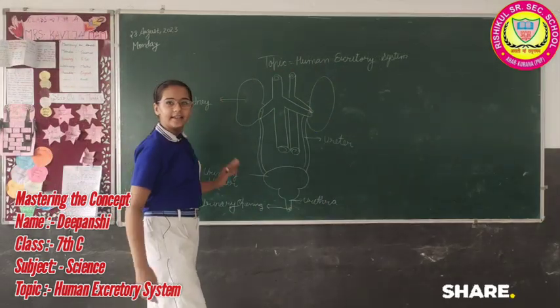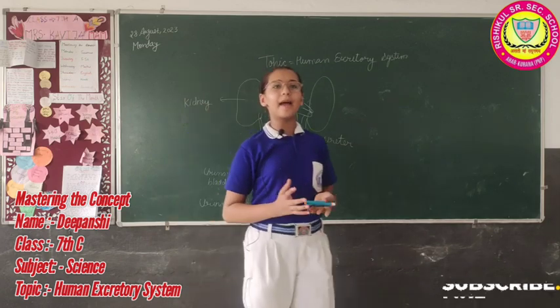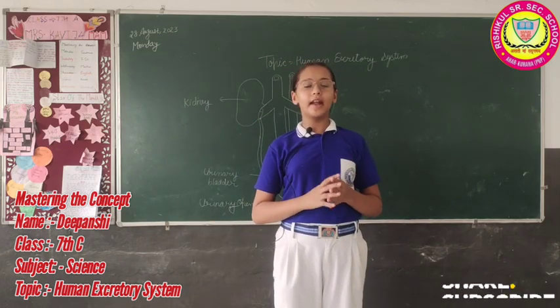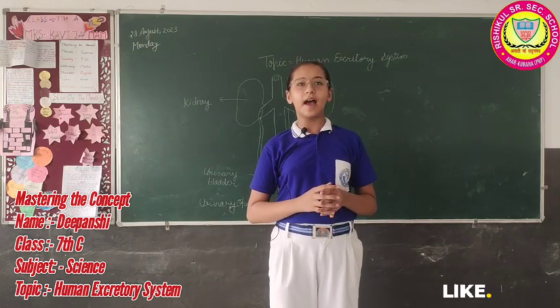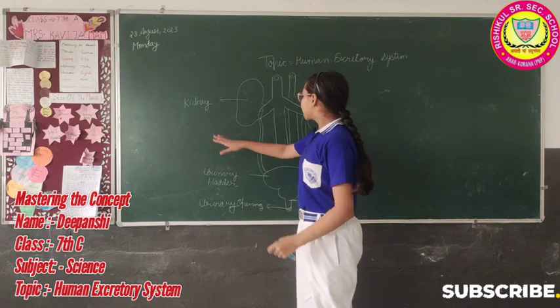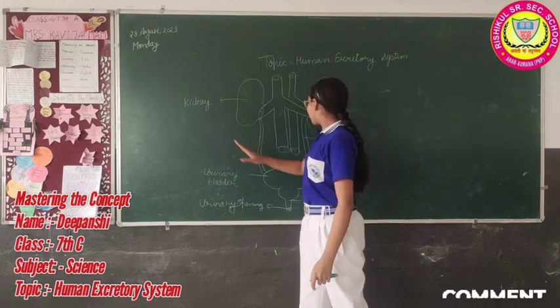What is a kidney? Kidneys are magic filters because they filter unwanted substances from the blood. This is called the kidney.